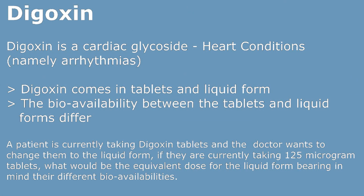Hi everyone, for today's review topic we are going to be talking about digoxin. Digoxin is a narrow therapeutic drug used in arrhythmias. It is a cardiac glycoside used in heart conditions, namely arrhythmias.